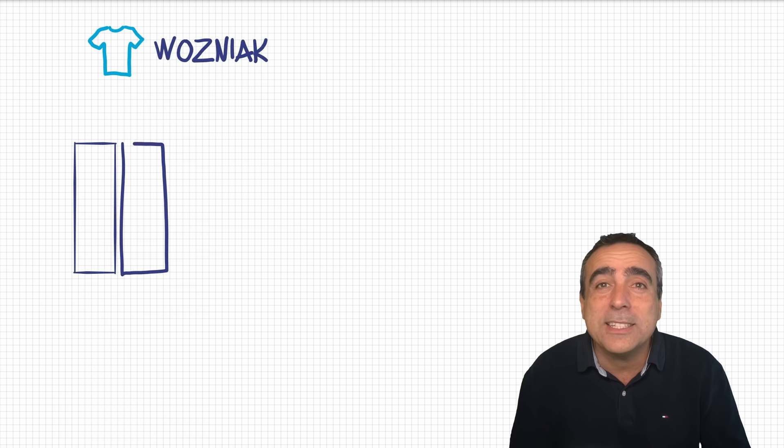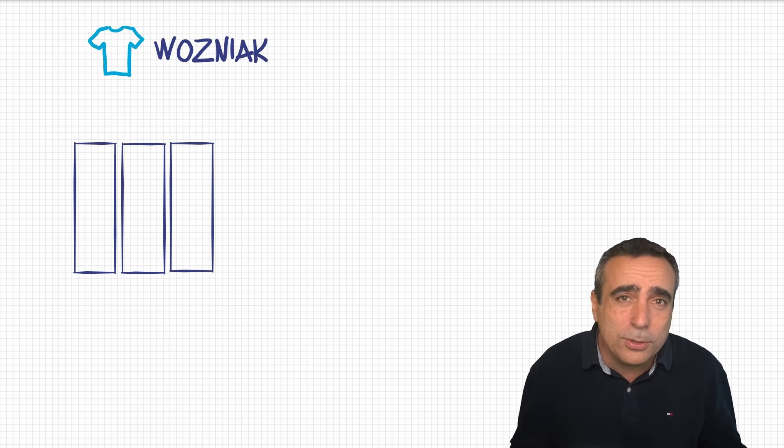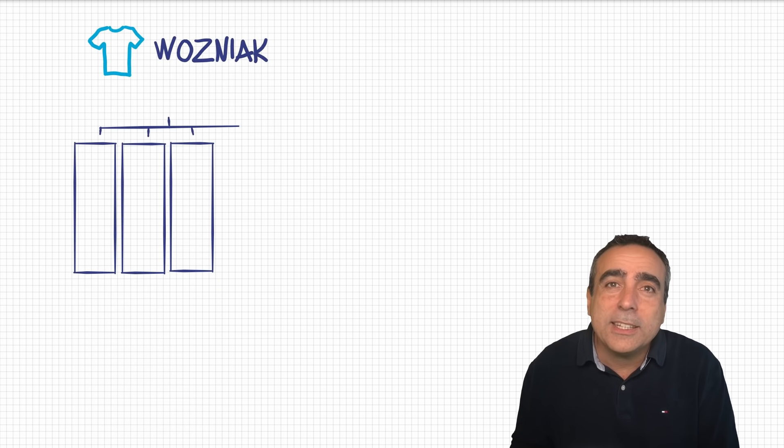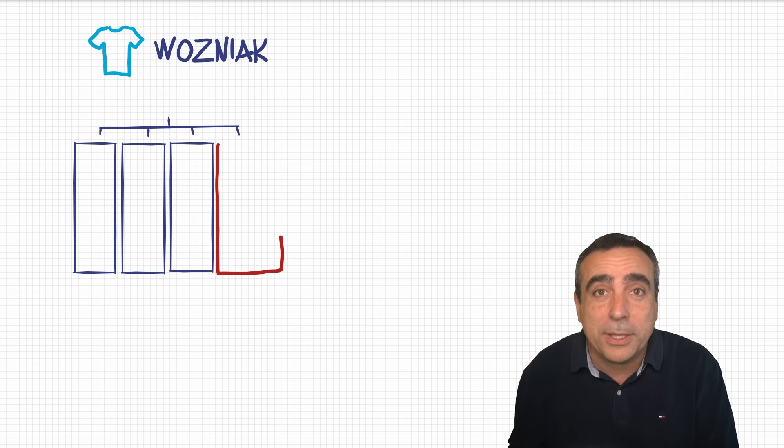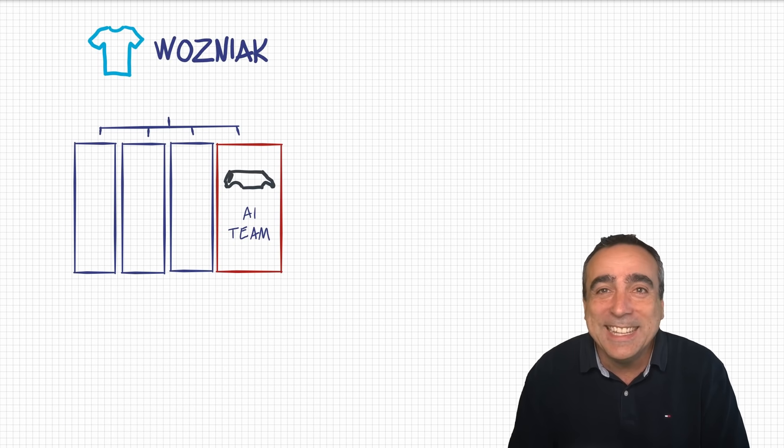So the org chart for this type of organization will look something like this. You will have the different business units. This could be departments like marketing, sales, HR, or there could be different products, P&Ls, whatever. But then when embracing AI, a Wozniak type organization will create a new department to centralize all the AI development. And they usually call it something like a center of excellence, or in our case, we can call it the AI team, which sounds super cool because it reminds me the A-Team.